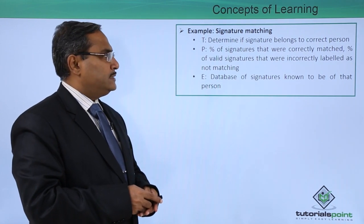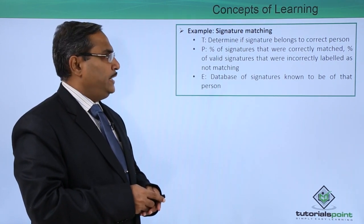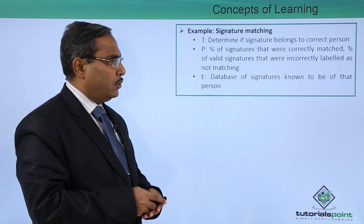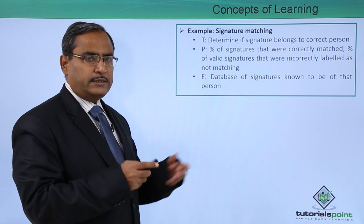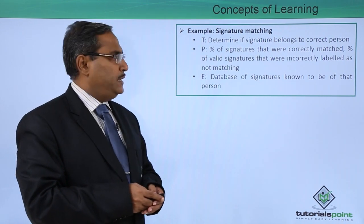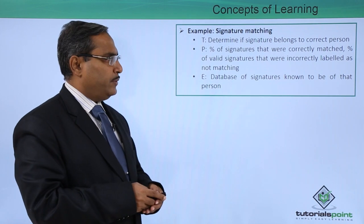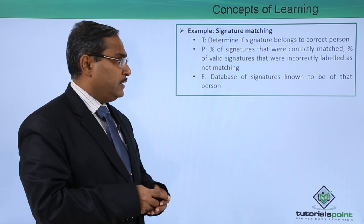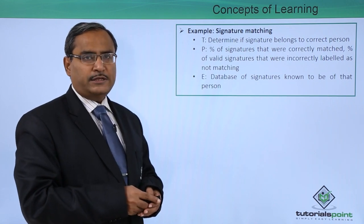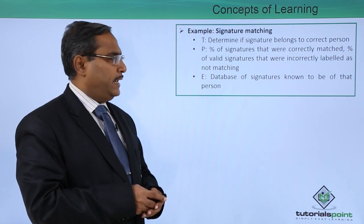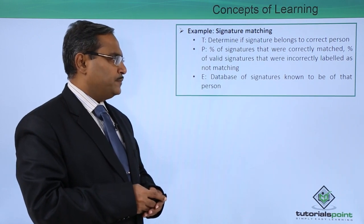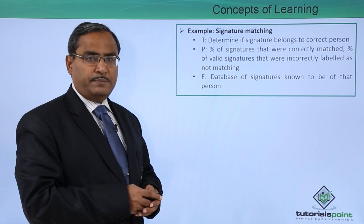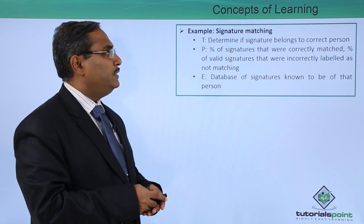Another example is signature matching. T, the task, is to determine if a signature belongs to the correct person. P, the performance measure, is the percentage of signatures correctly matched and the percentage of valid signatures incorrectly labeled as not matching. E, the experience, is a database of signatures known to be of that person. This is another example of machine learning.